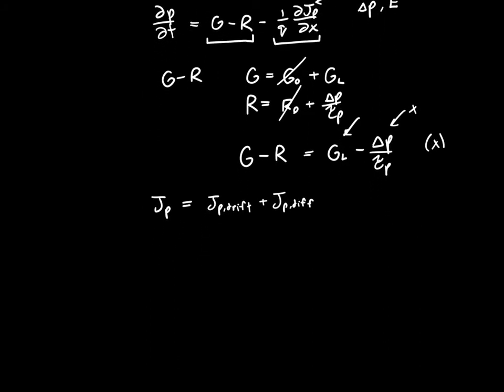We can actually expand these in a kind of interesting way. We can say that Jp drift and Jp diffusion have an equilibrium component and a non-equilibrium component. So this is equal to Jp0 drift plus J delta p drift plus Jp0 diffusion plus J delta p diffusion. These excessively long subscripts are just subscripts, they're not multiplying anything.